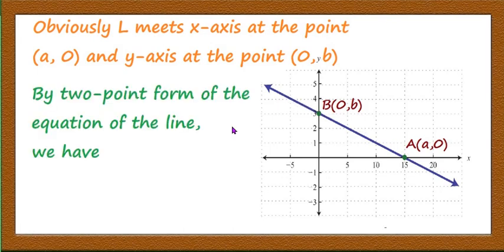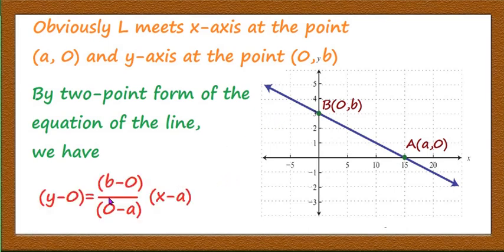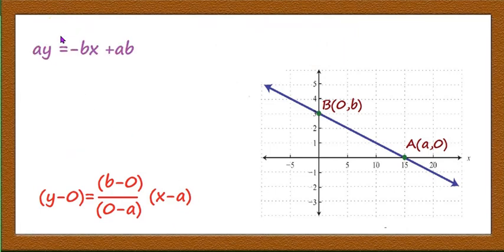By the two-point form, we have: y - 0 = (b - 0)/(0 - a) into (x - a). The formula is y - y1 = (y2 - y1)/(x2 - x1) into (x - x1), where x1 = a, y1 = 0, x2 = 0, and y2 = b. On simplification we get ay = -bx + ab, or bx + ay = ab.